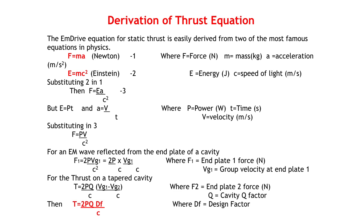For the total thrust on the tapered cavity, T equals 2P Q over C times Vg1 minus Vg2 over C. Remember we have already defined T as F1 minus F2, and Q as a measure of the number of reflections that take place within the resonant cavity. This equation can be conveniently written as T equals 2P Q over C times DF, where DF is the design factor which is dependent on the diameter of the two end plates.